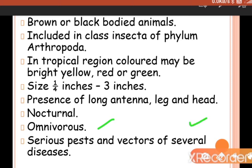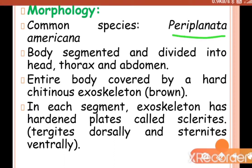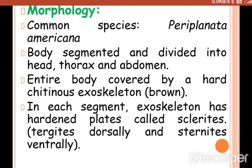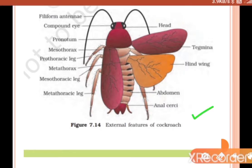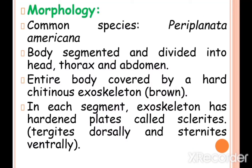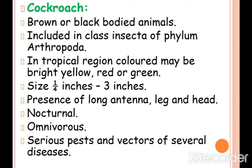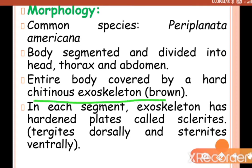Cockroaches are serious pests and vectors of several diseases. Regarding morphology, the most commonly found species is Periplaneta americana. The body is segmented and divided into head, thorax, and abdomen, as you can see in the external features of the cockroach. The entire body is covered by a hard chitinous exoskeleton.